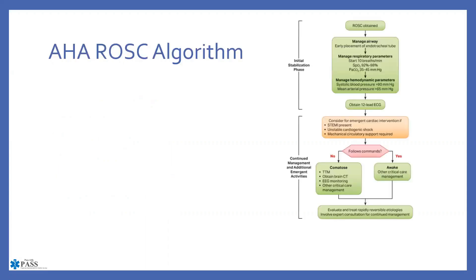When we look at the American Heart Association ROSC algorithm, once ROSC is obtained, we obviously want to manage their airway, manage respiratory parameters, and we're looking for saturation somewhere between 92 and 98 percent. That is based on oxygen-free radicals — we don't want them necessarily at 100 percent. We should be guiding for an end-tidal CO2 of somewhere between 35 and 45, and blood pressure should be greater than 90. Remember, this is your permissive hypotension. Mean arterial pressure should be greater than 65, which tells us they are perfusing their end organs.